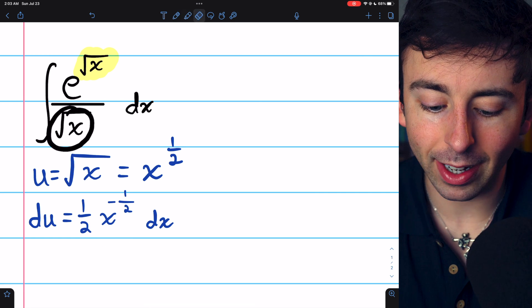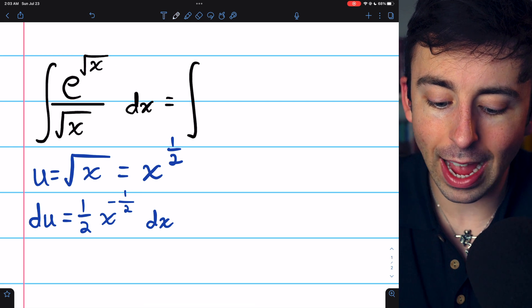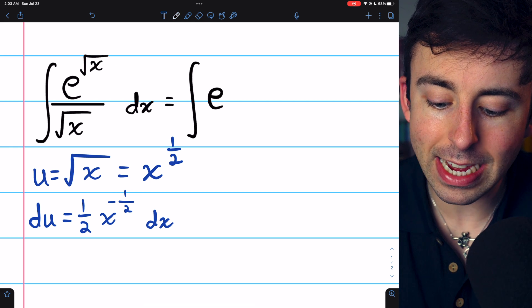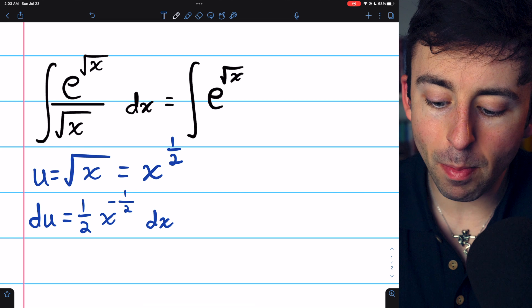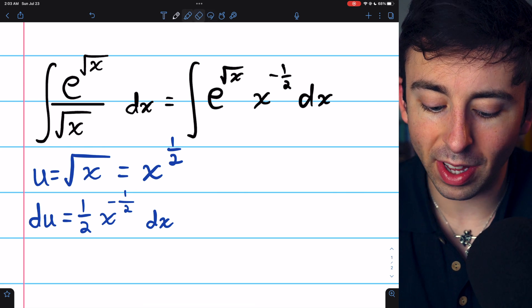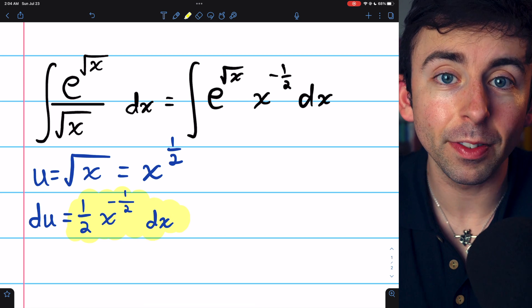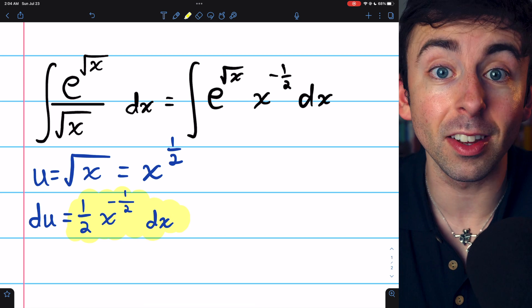Because this square root of x is in the denominator, we could rewrite this integral as the integral of e to the square root of x multiplied by x to the negative half. So you can see that what we've got here is a multiple of what's left in the integrand. So this is going to work.